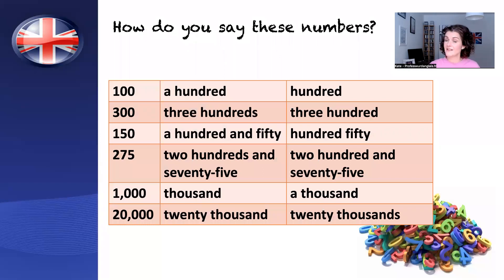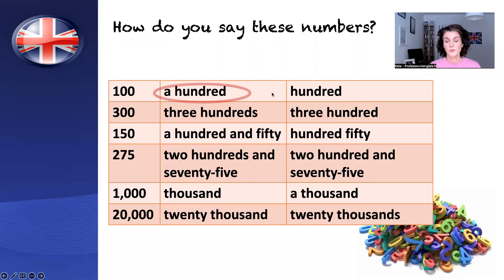Okay, let's try that again, slightly different. I have some numbers here. How do you say these numbers? So let's look at the first one. Is this 'a hundred' or 'hundred'? We say 'a hundred'. We use the indefinite article 'a' to mean one. A hundred.